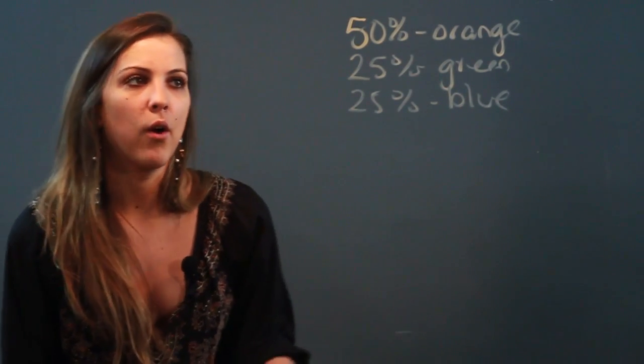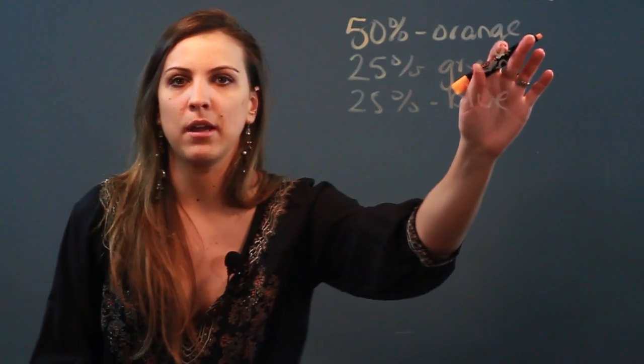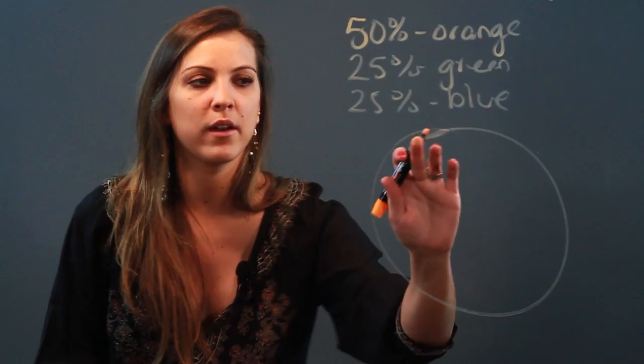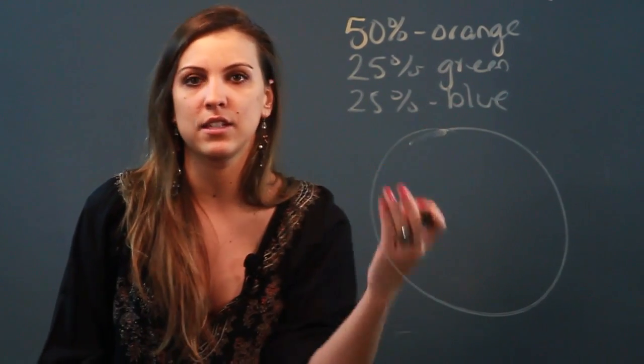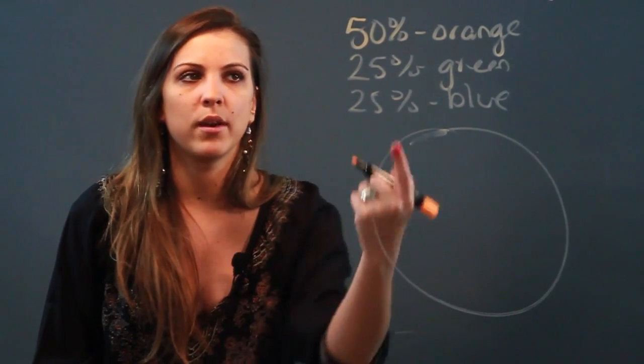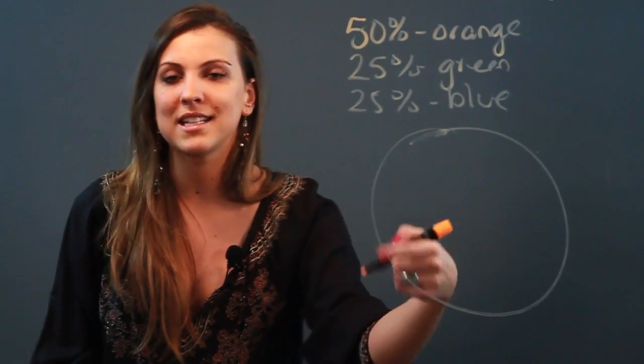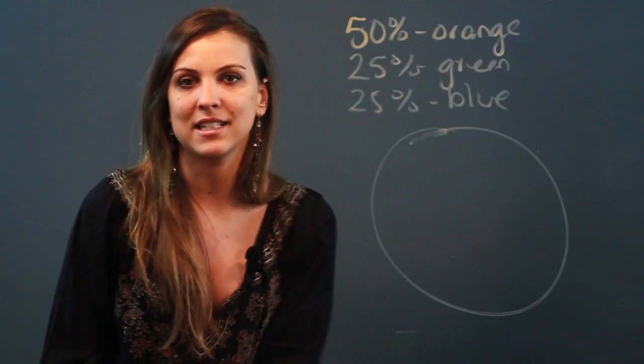So you know that 50% of the pie chart is orange. You would just cut it in half, but if we wanted to be really precise about it and get a degree measurement, what you need to know is 50% of the entire circle's degrees. The important thing to know is that an entire circle is 360 degrees.